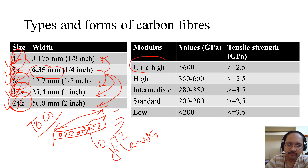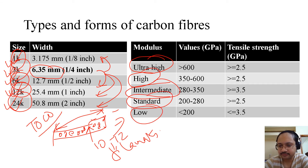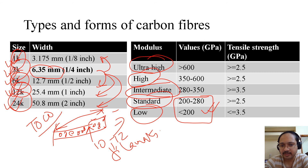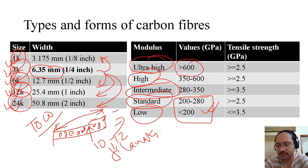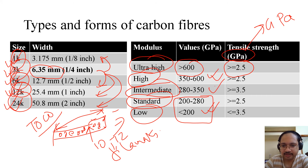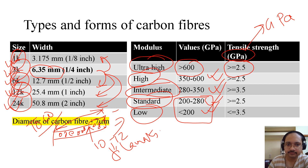There are five types of carbon fiber by modulus: ultra-high modulus, high modulus, intermediate modulus, standard modulus, and low modulus. Standard and low modulus fibers are commonly found in the 200–280 GPa range. As we move to higher modulus, applications become more aerospace- or space-oriented. Ultra-high modulus exceeds 600 GPa with tensile strength greater than 2.5 GPa. The diameter of a carbon fiber is typically 7 microns.